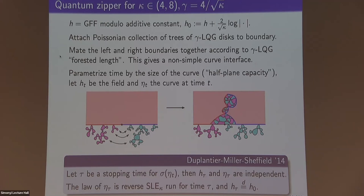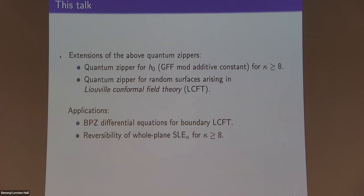This gives two different quantum zipper stories: one for simple curves (kappa ≤ 4) and one for self-intersecting SLE (4 < kappa < 8). For this talk I want to explain extensions of these quantum zippers — first to the setting where kappa ≥ 8 giving a space-filling curve, and second, instead of looking at the GFF modulo additive constant, looking at random surfaces arising from Liouville conformal field theory. This perspective allows us to prove BPZ differential equations for LCFT on the unit disk, and also to prove that whole-plane SLE is reversible for kappa ≥ 8.